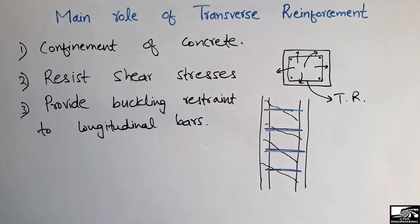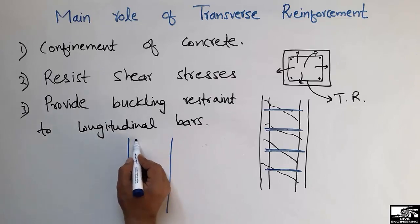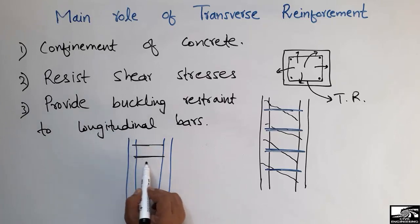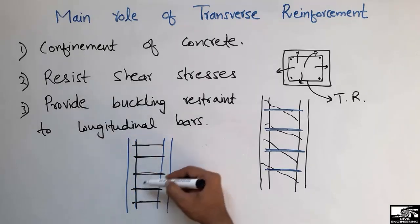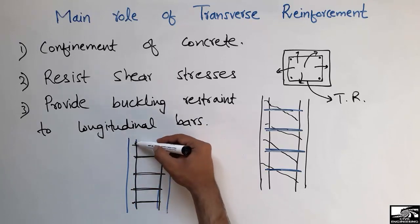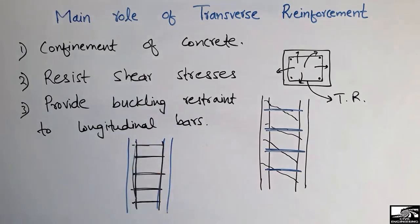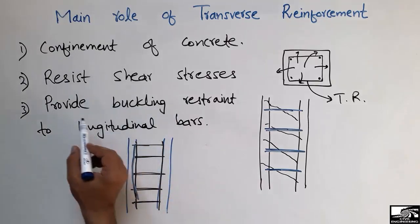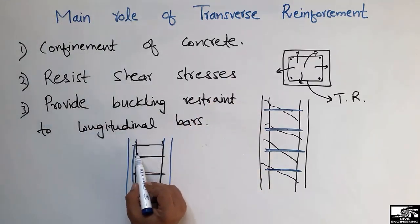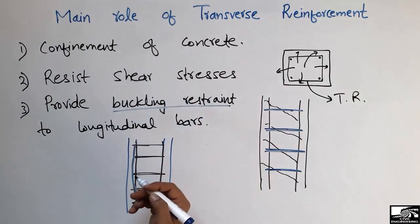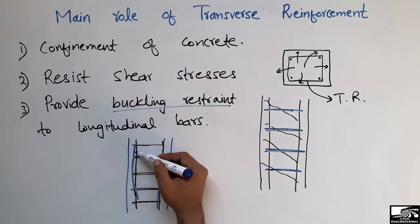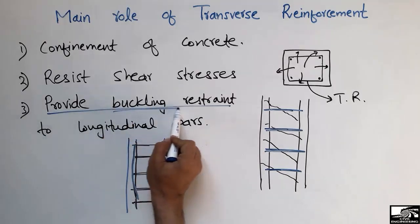If we consider a column with longitudinal bars running vertically and transverse reinforcement represented around them, the longitudinal bars tend to buckle outward under high load. This buckling can cause destruction of the column. The transverse reinforcement resists this by providing buckling restraint, preventing the longitudinal bars from going outside and avoiding collapse of the column.